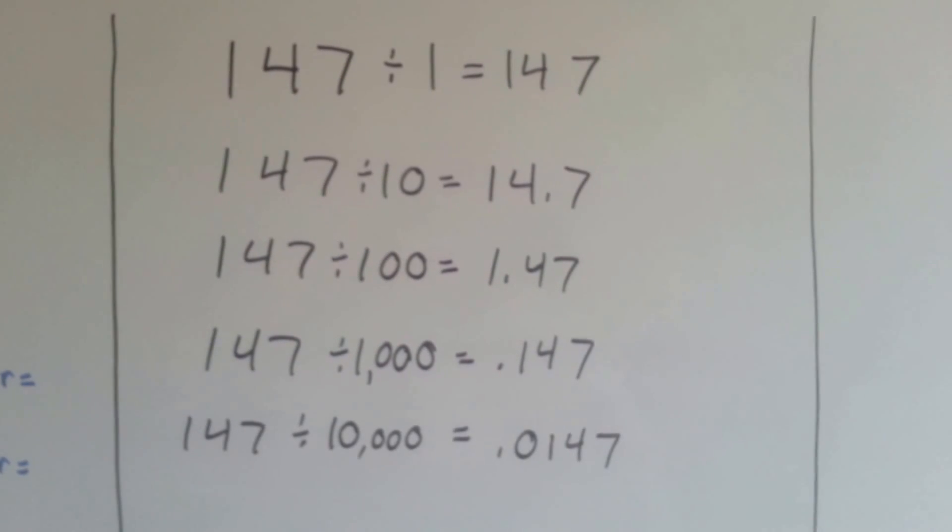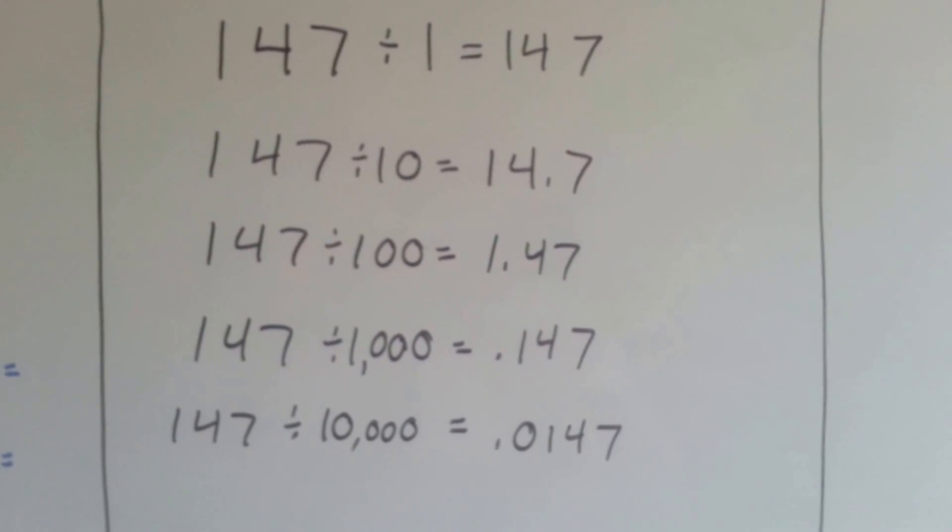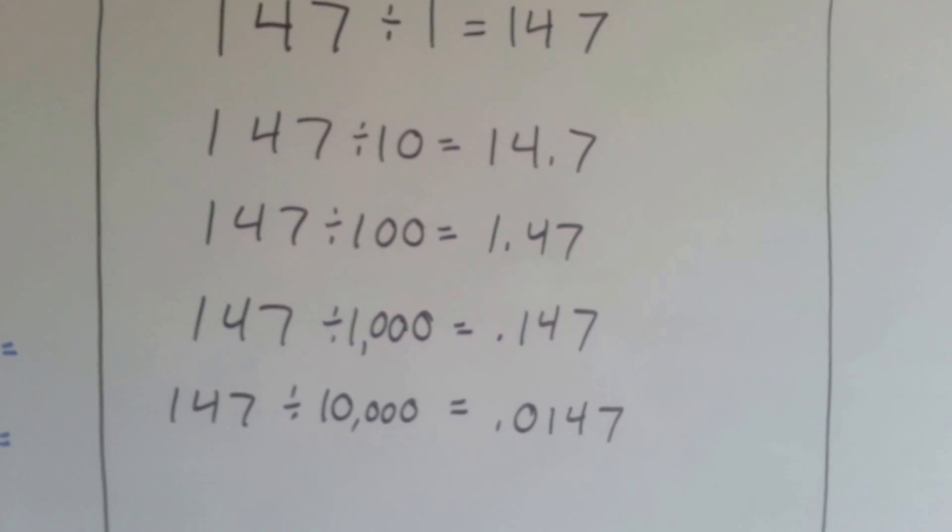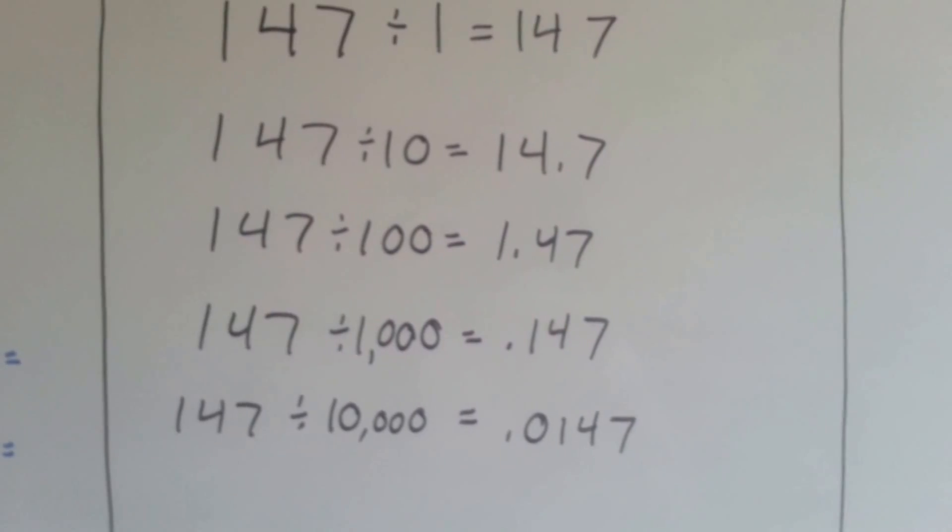Dividing by 100, the decimal place moves in between the 1 and the 4. Dividing by 1,000, it's now in front of the 1. Dividing by 10,000, we now had to put a 0 placeholder so that it could go in front of the 0.